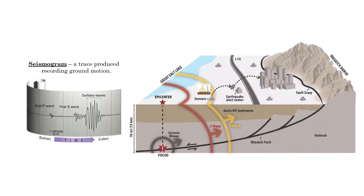This is what a seismogram looks like — the drawing a seismograph creates. The first wave detected is a P wave because it's the fastest. The second wave detected is an S wave, and the last waves detected are surface waves, which are L waves.